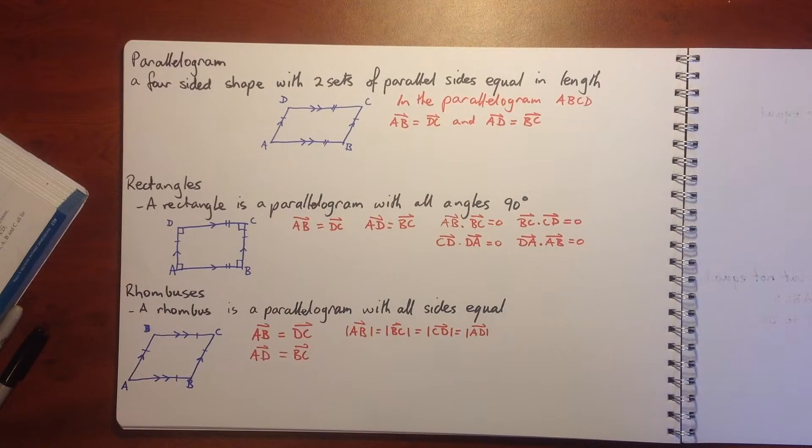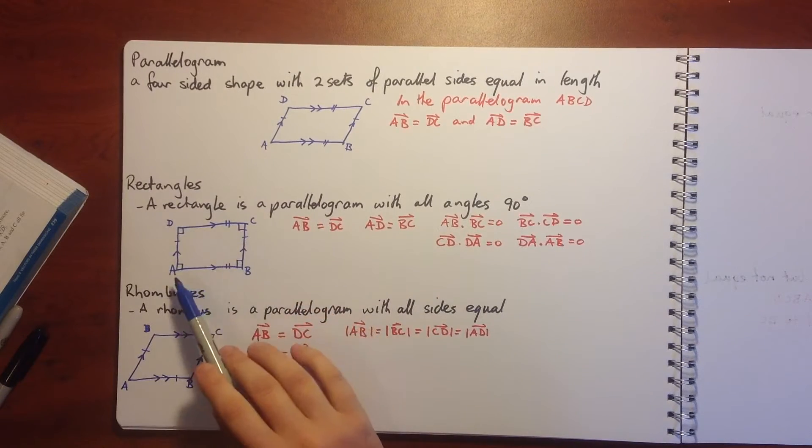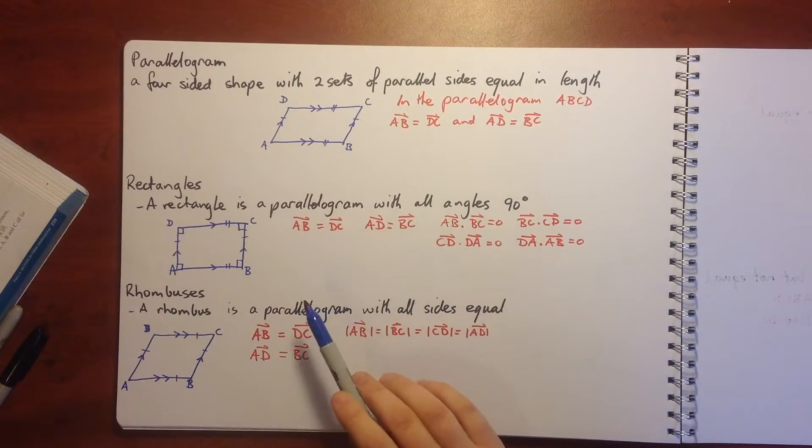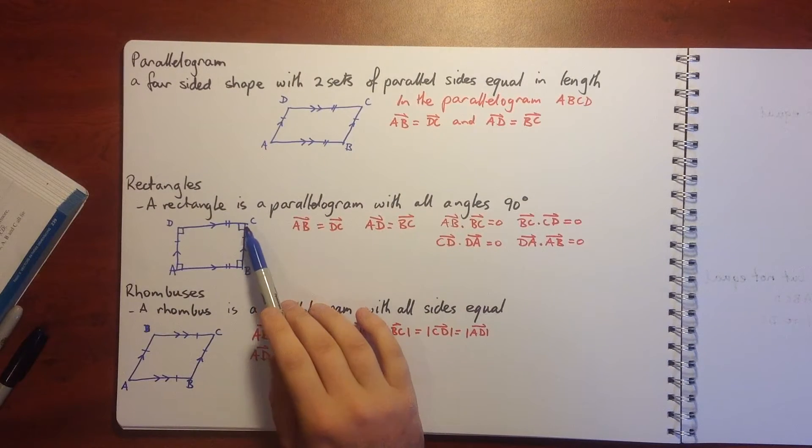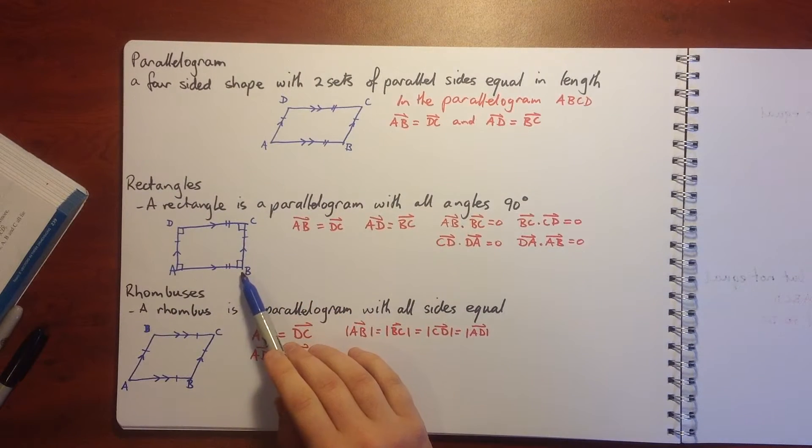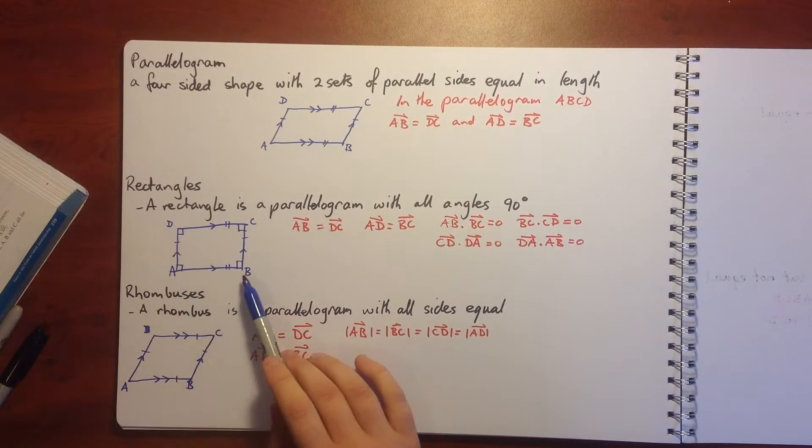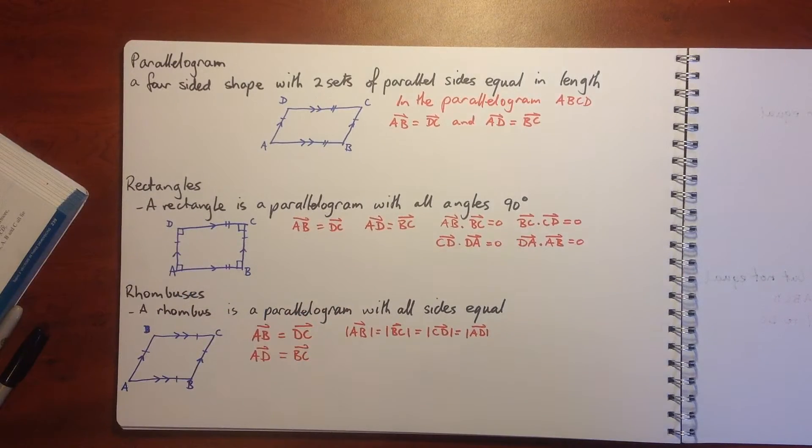For rectangles, a rectangle is a parallelogram with all angles 90 degrees. So that means AB equals DC and AD equals BC. But because our angles are 90 degrees, we can also say that AB dot BC equals zero because they're perpendicular. BC dot CD also equals zero, CD dot DA equals zero, and DA dot AB equals zero.